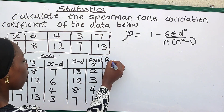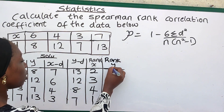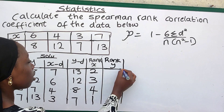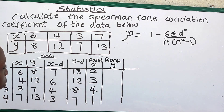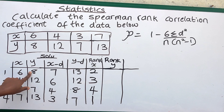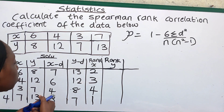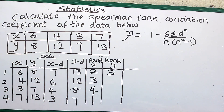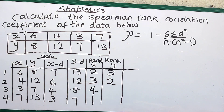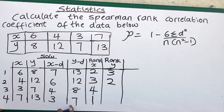After that we rank Y as well. The first number for Y is 8. What is the rank for 8 in descending order? It's 3. Then the next one is 12. What is the rank for 12 in descending order? It's 2. Next one is 7; the rank for 7 in descending order is 4.